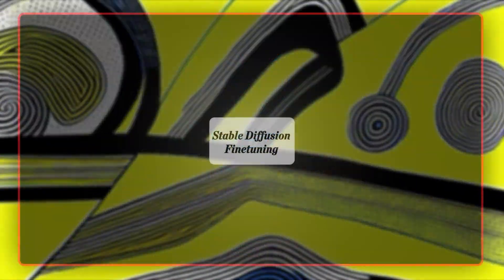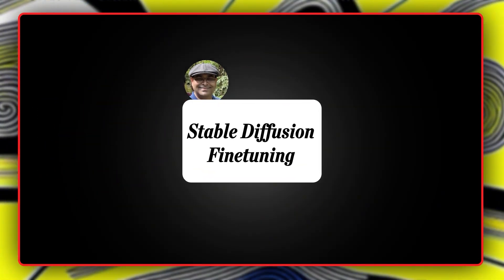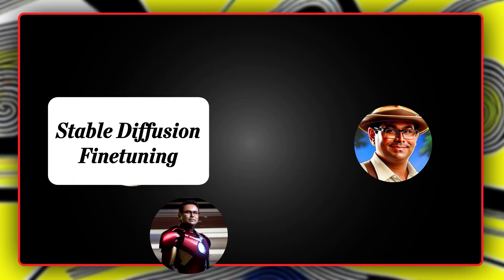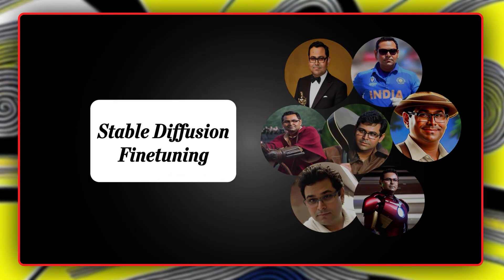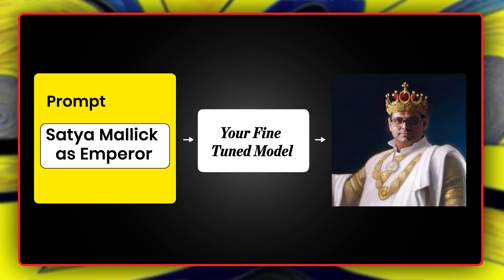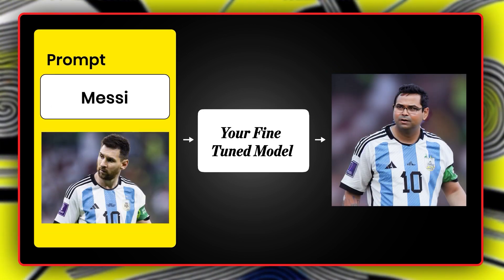The second course, Advanced AI Art Generation, is for those who want to dive deep into the world of generative AI. You just need to have basic programming knowledge. In this course, we will understand the stable diffusion model from a technical point of view. You will also learn how to fine-tune the stable diffusion model, which will help you get more control over the generated art.